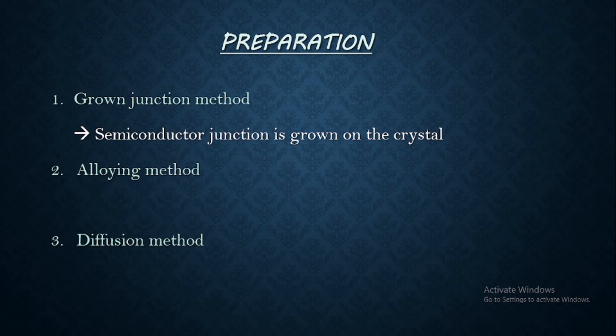In grown junction method, the semiconductor junction on the crystal is grown. Like for example, initially say N-type crystal is formed on melting or such and then acceptor impurities can be added from one end so that the added portion becomes P-type and already we had N-type semiconductor so it is going to form a P-N junction. So this is how grown junction method is working.